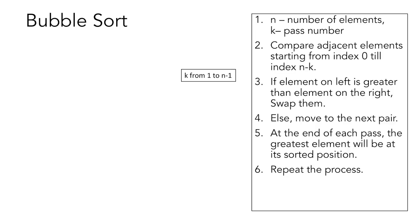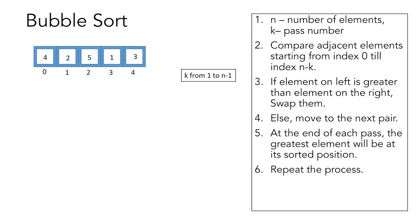So let's take an example and see how bubble sort works. Suppose this is the array given to us with 5 elements. Therefore the value of n would be 5, and in the first pass, that is k equal to 1, we have to make n-k comparisons, which would be 5-1, that is 4.